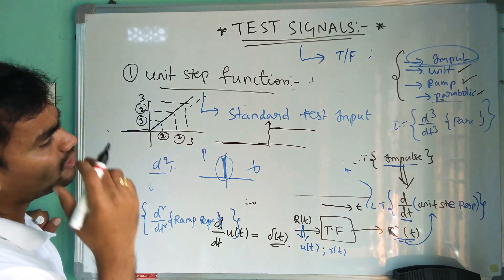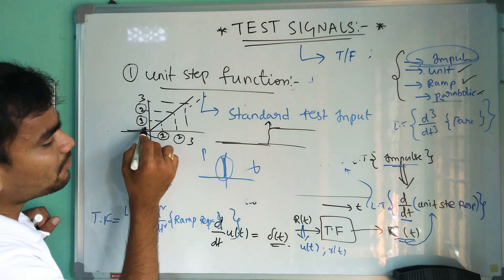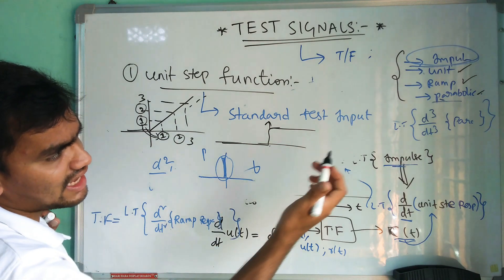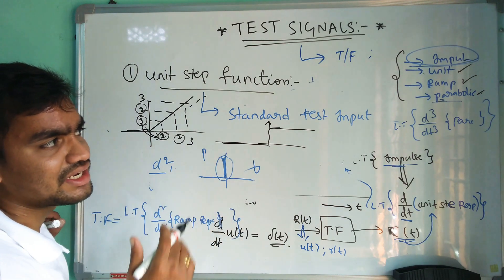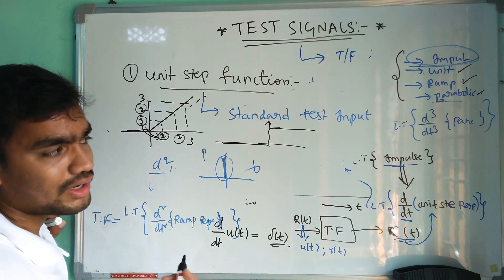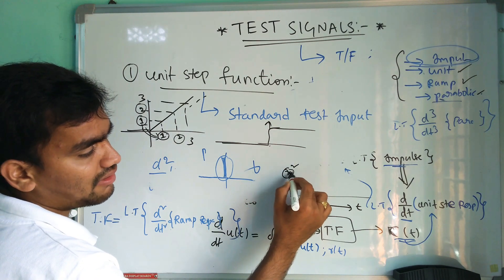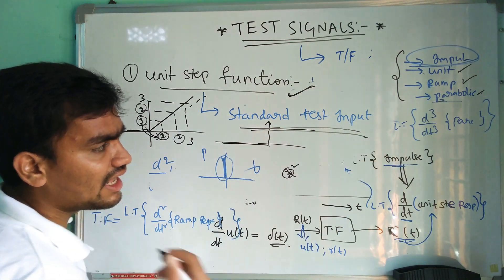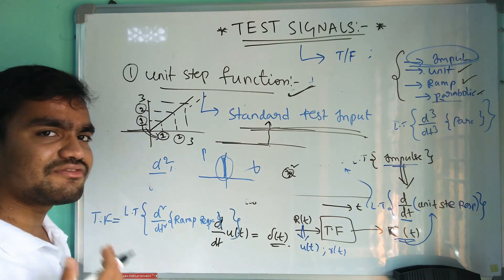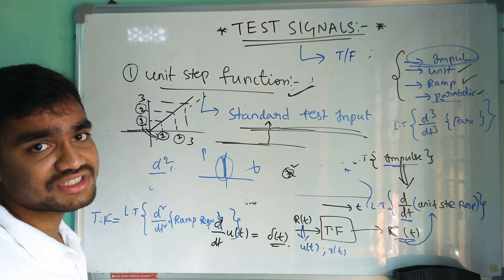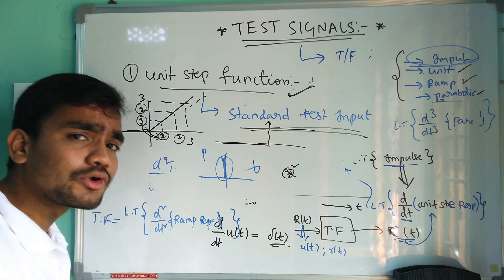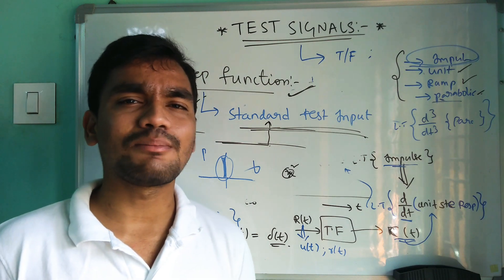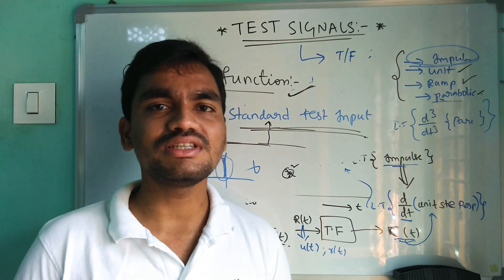The ramp function is not suitable as the standard test input due to synchronization problems in practical situations. The parabolic function is even more complicated as it extends to infinity very rapidly in the form of powers. That is why the unit step function is considered the standard test input signal, and about 95% of problems suitable for real life situations are considered using the unit step function as the standard test input.